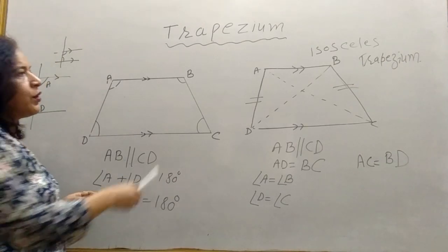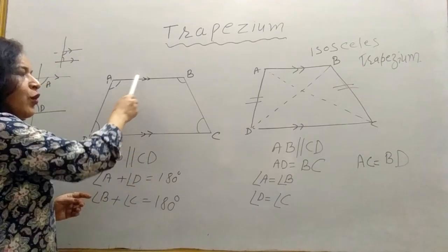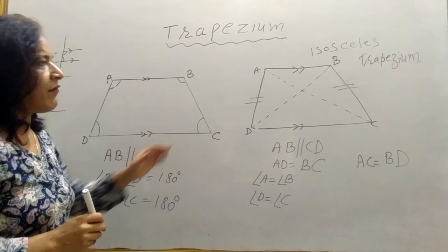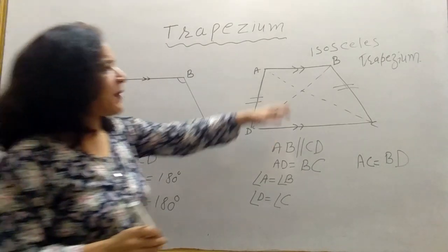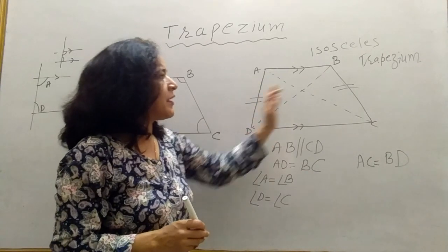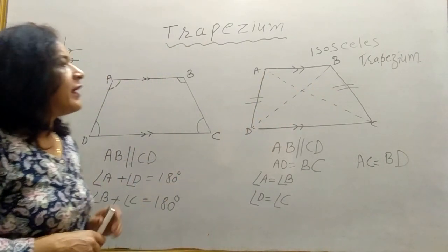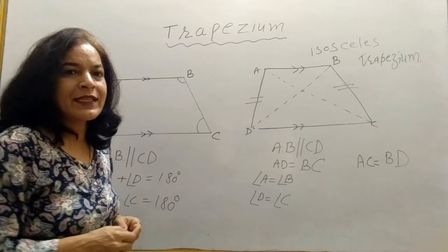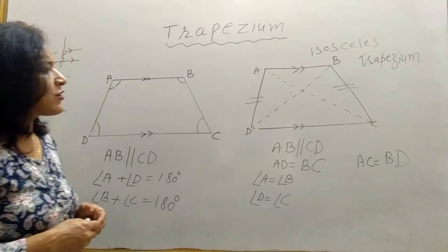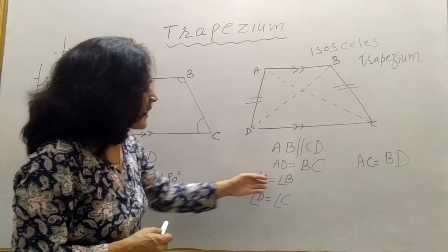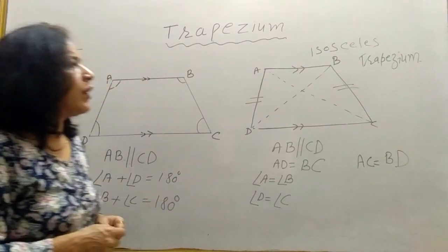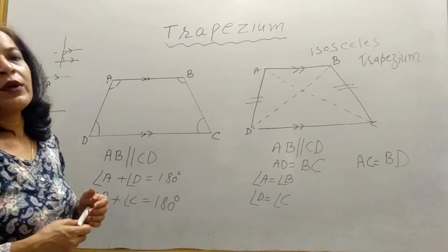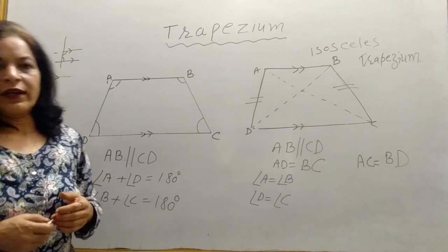So, where only one pair of opposite sides is parallel, that is a trapezium. And where one pair is parallel and another pair is equal, that is called an isosceles trapezium. In an isosceles trapezium, base angles are equal and diagonals are also equal.